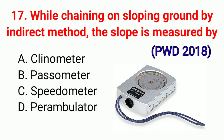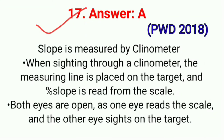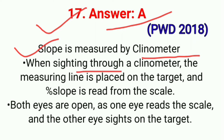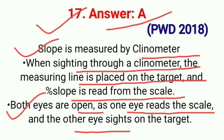Question No. 17. While chaining on sloping ground by indirect method, the slope is measured by — correct option A: Clinometer. When sighting through a clinometer, the measuring line is placed on the target and percentage slope is read from the scale. Both eyes are open — one eye reads the scale and the other eye sights on the target. Correct option A.